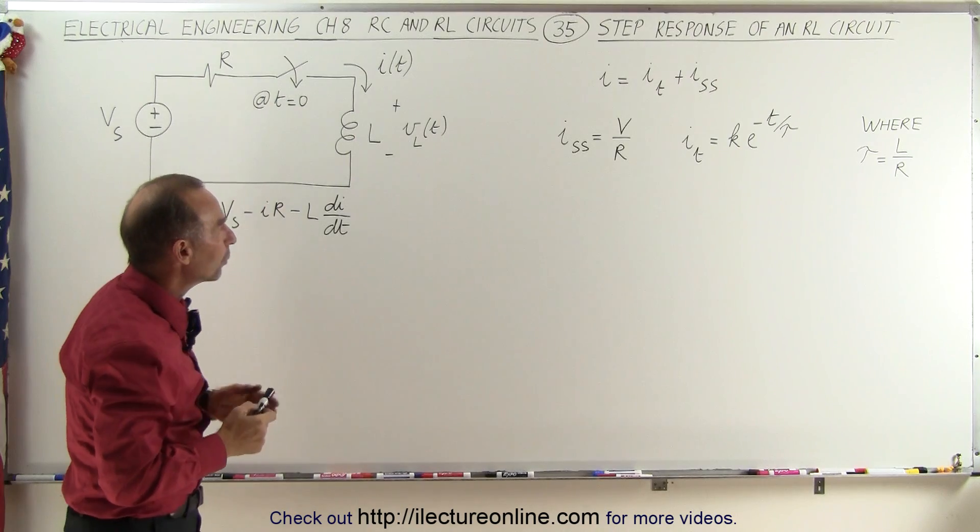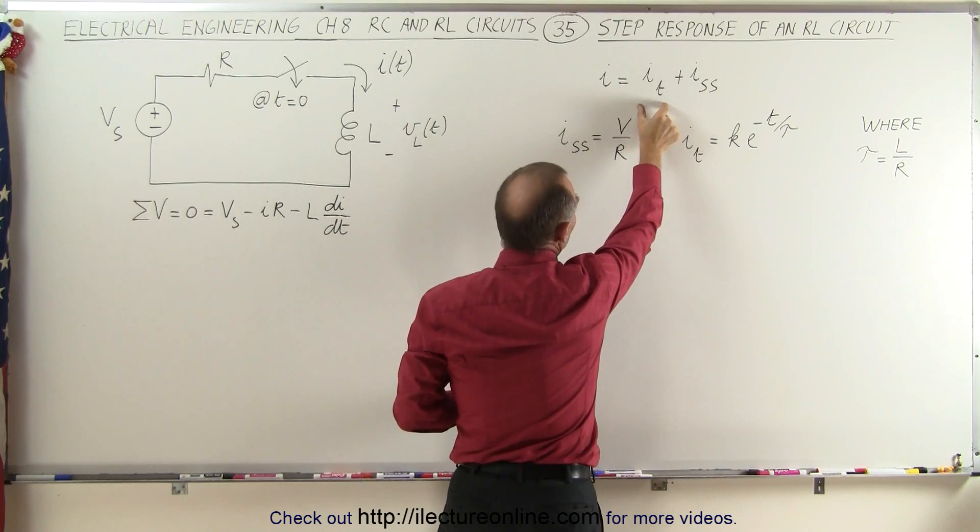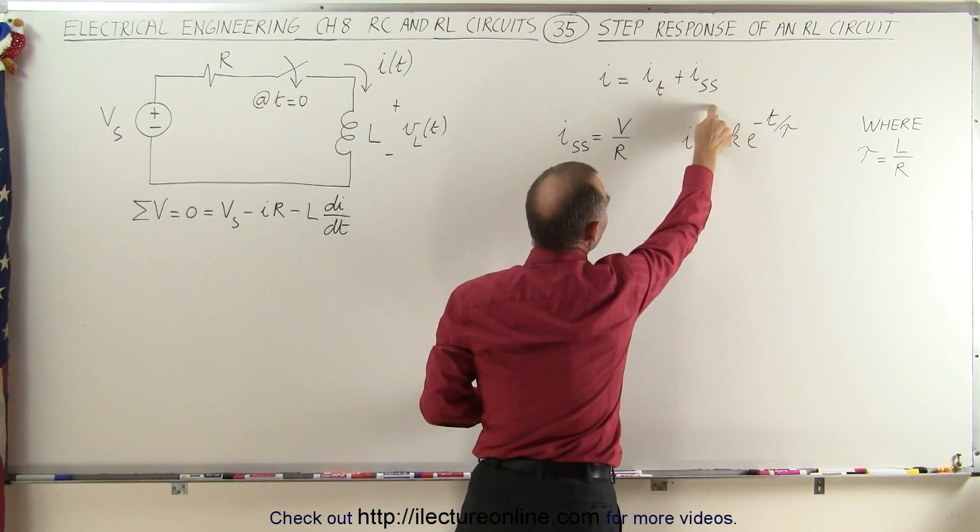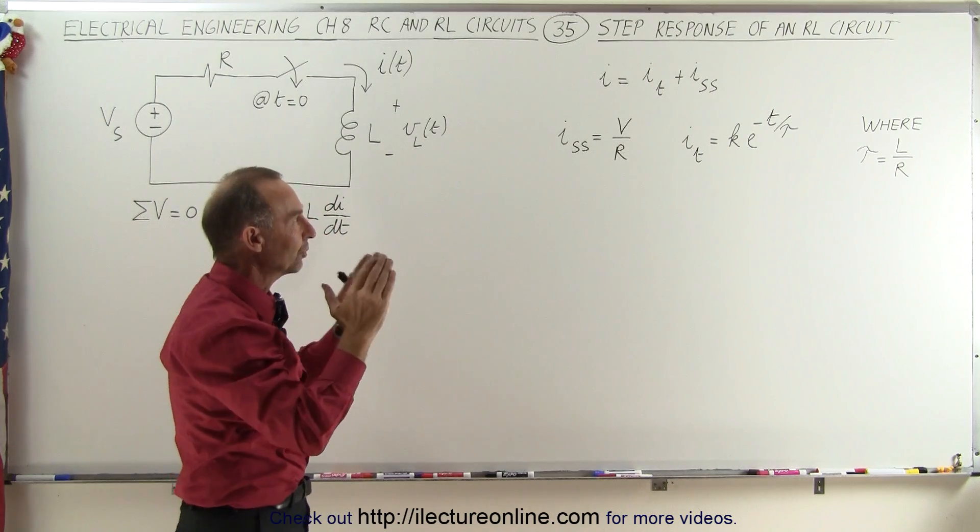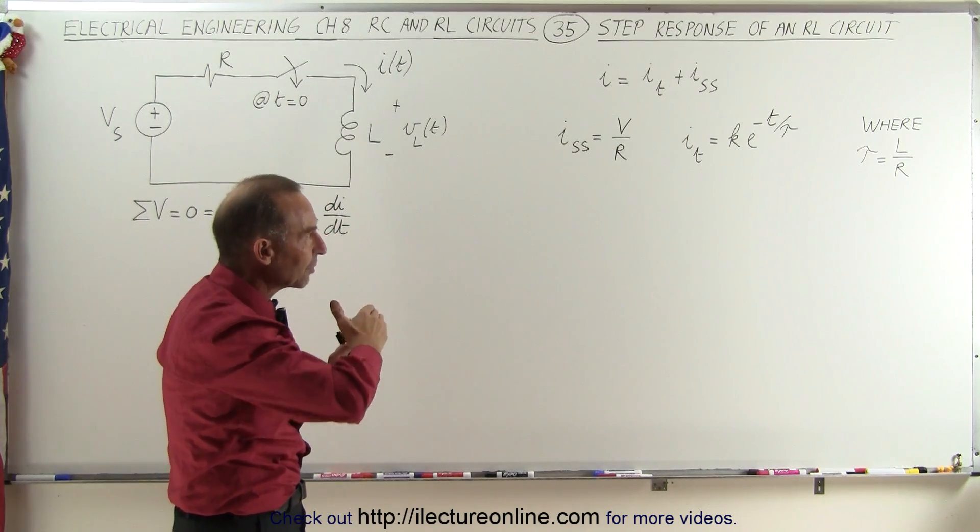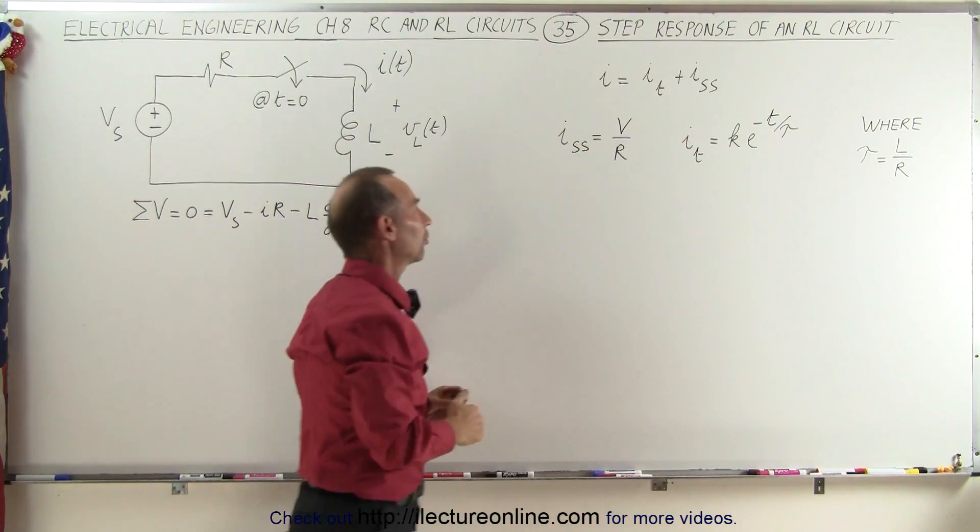So to find out what the current in the circuit is, we need to add the transient portion of the current plus the steady state portion of the current. The transient current would be the current in the circuit for a short period of time until you have steady state current. We add those two together, that will give us the total current in the circuit.